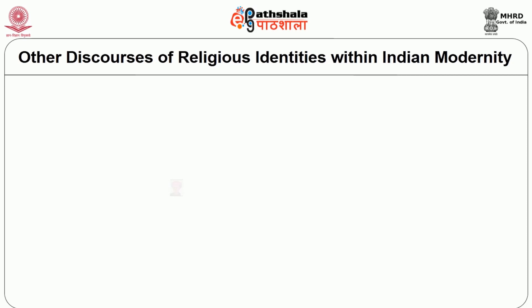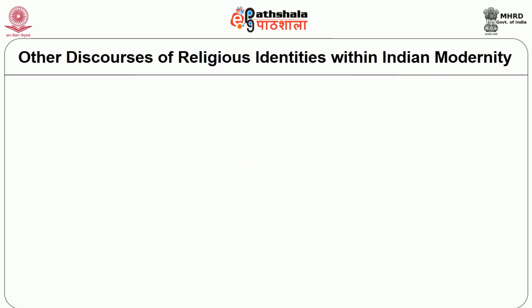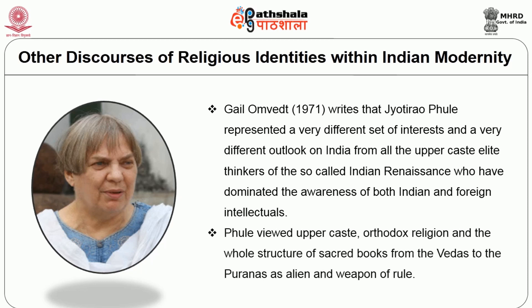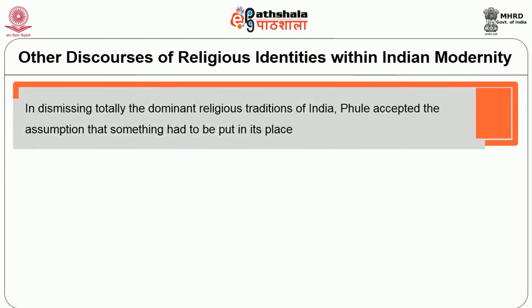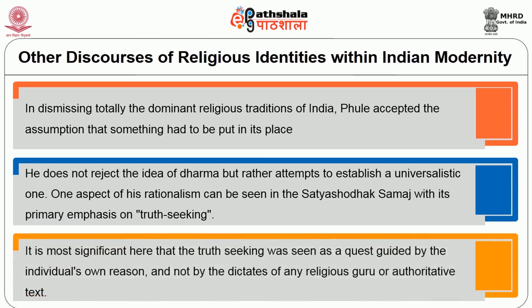Religious identity in the context of modern India has also been shaped by Jyoti Rao Phule and Dr. B.R. Ambedkar. Both these figures provide us with a critique of Brahminism and Brahminical Hinduism. Gail Omvedt writes that Phule presented a very different set of interests and outlook in India from the upper-caste elite thinkers of the so-called Indian Renaissance. Phule viewed upper-caste orthodox religion and the whole structure of sacred books from the Vedas to the Puranas as alien weapons of rule. In dismissing the dominant religious traditions of India, Phule accepted that something had to be put in their place. He does not reject the idea of dharma but attempts to establish a universalistic one. One aspect of his rationalism can be seen in the Satyashodak Samaj, with its primary emphasis on truth-seeking — guided by the individual's own reason and not by the dictates of any religious guru or authoritative text.